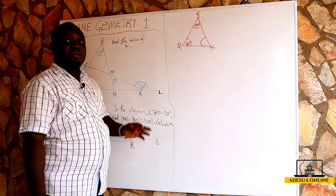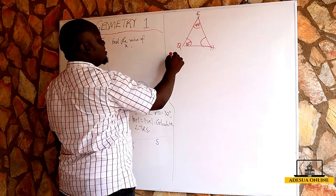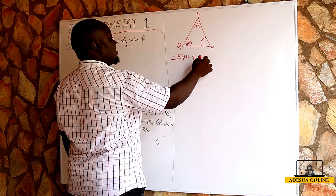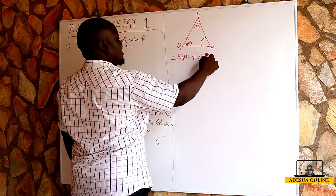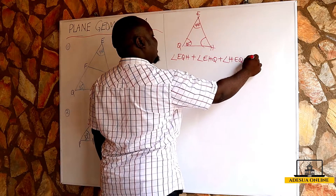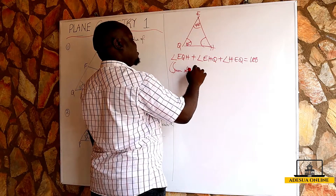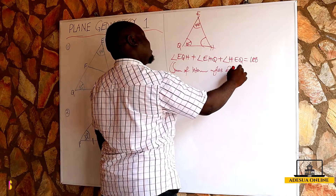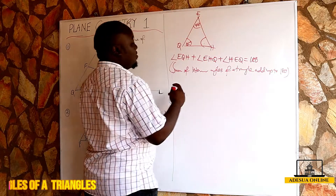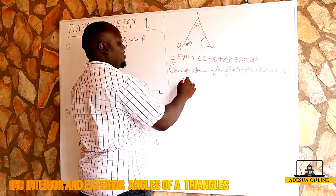Let's solve for angle EHQ. The sum of interior angles of a triangle add up to 180 degrees. So we can say angle EQH plus angle QEH plus angle EHQ is equal to 180 degrees. Substituting the values: 85 degrees plus 40 degrees plus angle EHQ is equal to 180.